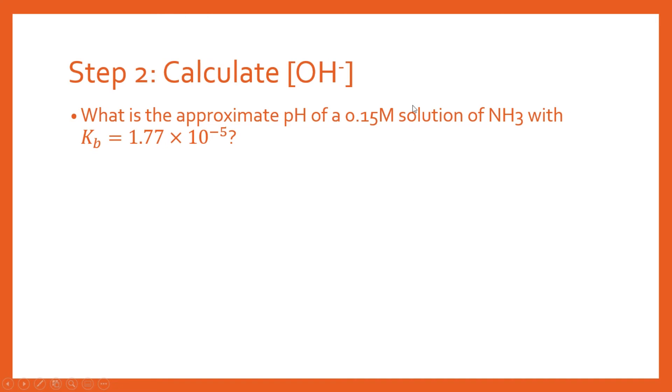The next step is to calculate the hydroxide ion concentration, which is going to be very simple. We've got the equation, we just substitute in our Kb, substitute in our concentration from here, and we end up finding the concentration of our hydroxide ions very simply.